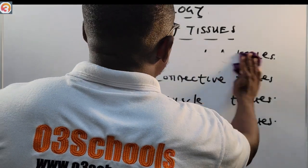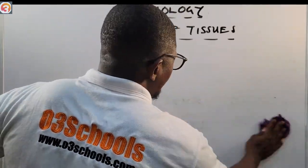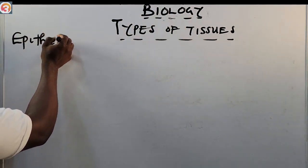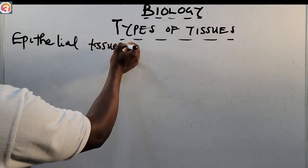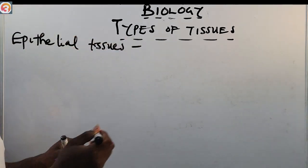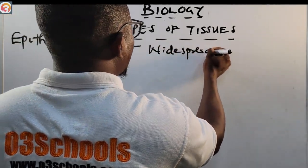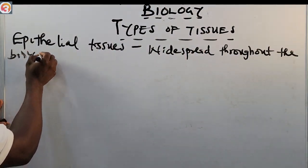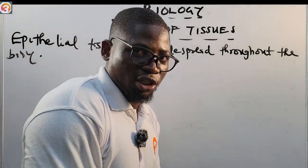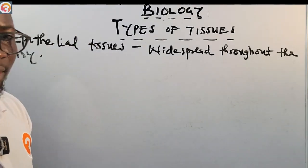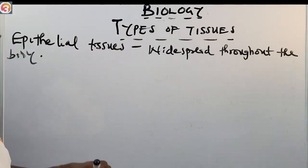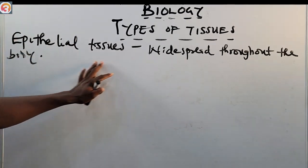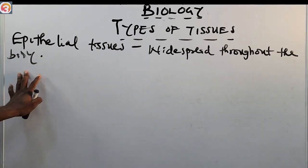Let us begin with the epithelial tissues. Epithelial tissues are widespread throughout the whole body — for example, your skin is an epithelial tissue, the reproductive tract, and the airway are also epithelial tissues.